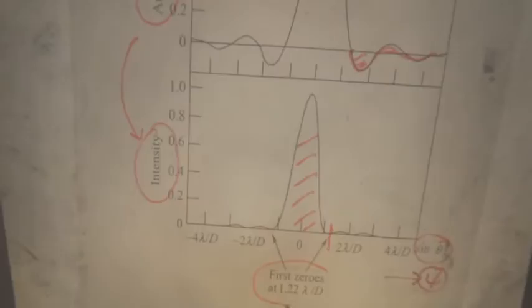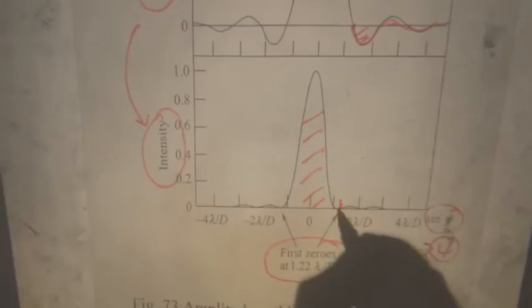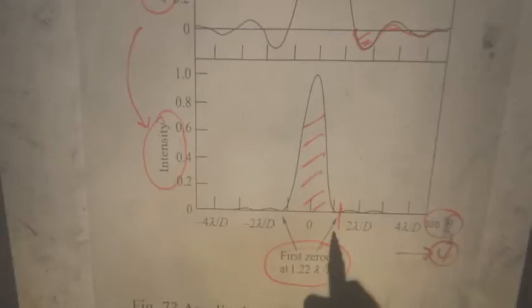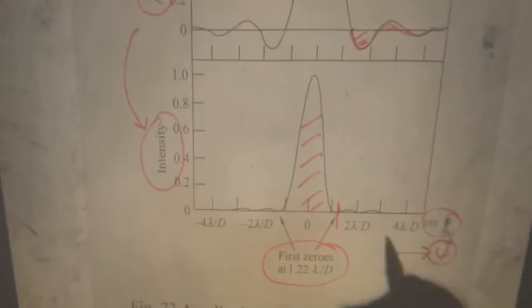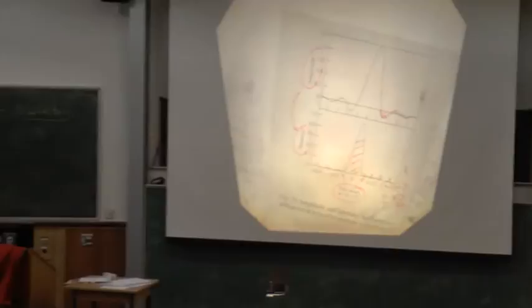Of course, to get the actual intensity or irradiance of the light we have to square this function. The important point is the first zero. In one dimension it occurs at λ/d; in two dimensions — for the circular aperture — it occurs at 1.22λ/d. The zeros are not quite linearly spaced because it's not exactly a sine function, but you do need to know this answer because the circular aperture is an important one.